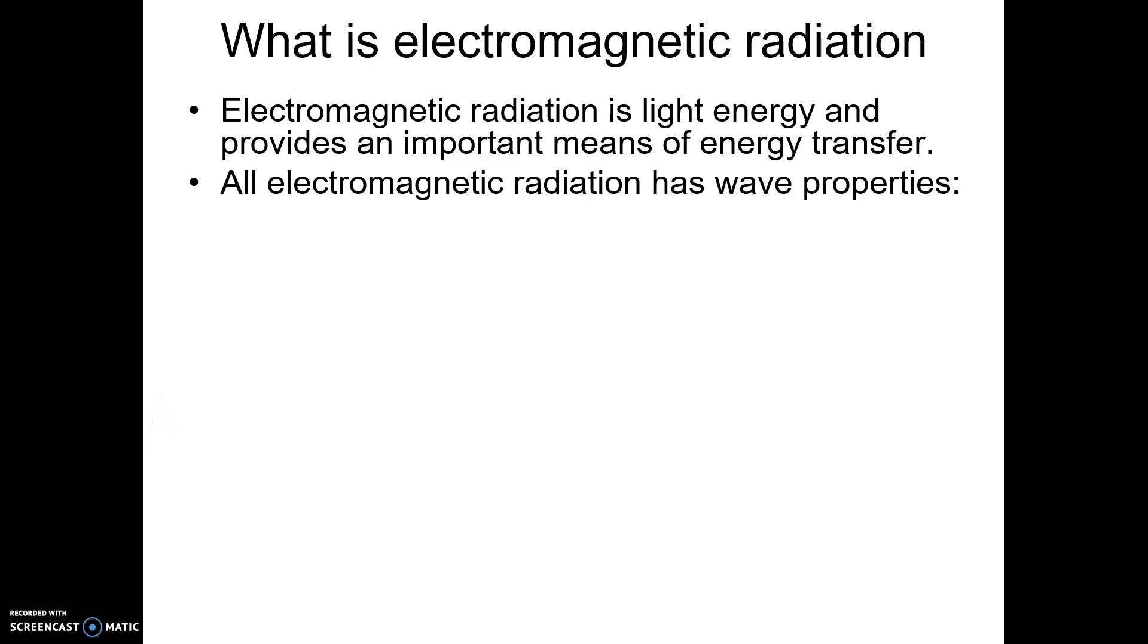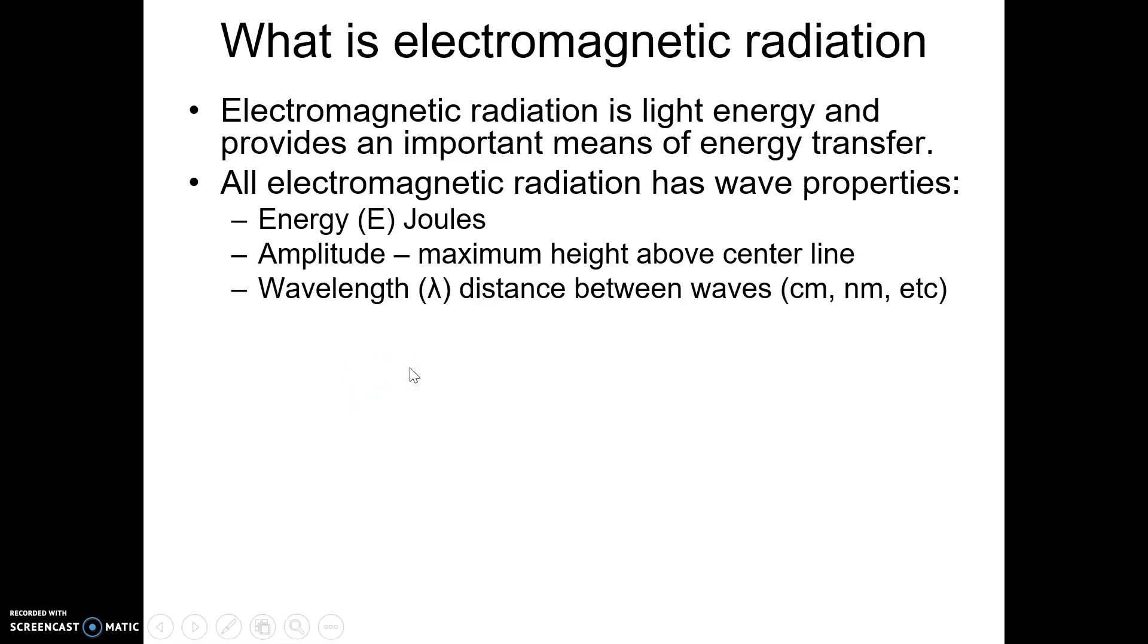Electromagnetic radiation has all the wave properties that you learned about in physics. It has an energy associated with it. That energy unit we use is joules in chemistry. It has an amplitude, the maximum height above the center line. It has a wavelength, we give the variable lambda to it, which is the distance between waves. And it has a frequency given the Greek letter nu, which is the number of waves per second.